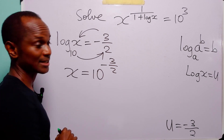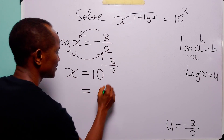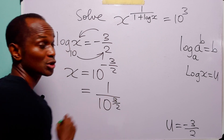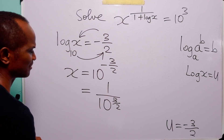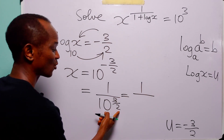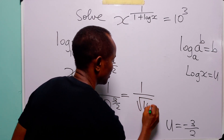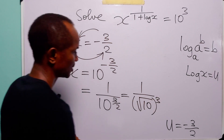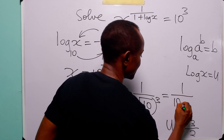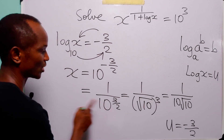You can leave your answer in this form or simplify it. Because of the negative exponent we have 1 over 10 to the power 3 over 2, and of course this simply means 1 over the square root of 10 cubed. You can leave your answer in any of these equivalent forms.